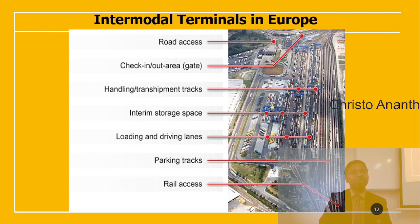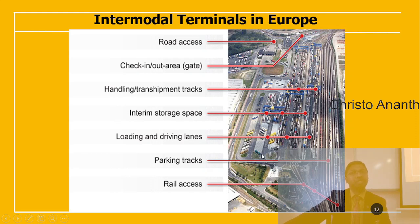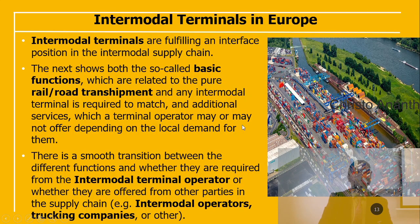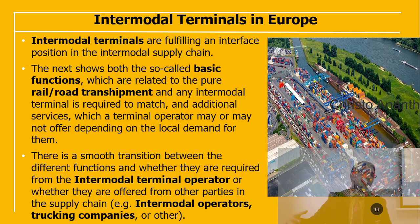Intermodal terminals in Europe feature road access with check-in/check-out areas, handling and transshipment tracks, interim storage space, loading and driving lanes, parking tracks, and rail access. Intermodal terminals fulfill the interface position in the intermodal supply chain, satisfying basic functions and needs related to both rail and road transit.